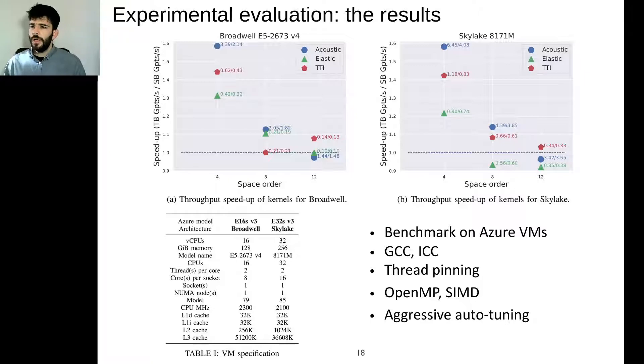We did the experimental evaluation over Azure virtual machines, Broadwell architecture and Skylake architecture. The performance has been satisfactory for space order 4 and space order 8, ranging from 1.3 to 1.6 for space order 4 depending on the model and around 1.1 to 1.15 for the acoustic and elastic in Broadwell and acoustic and TTI in Skylake. For space order 12 we had almost no speedup, and this is expected because temporal blocking is not expected to be performing for high space orders due to the fact that asymptotically it tends to look like space blocking.